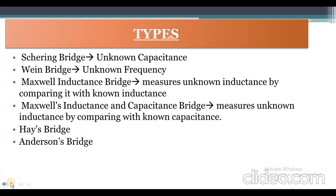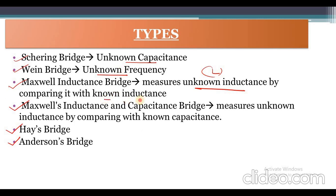These are the different types of AC Bridges: Schering Bridge, Wien Bridge, Maxwell Inductance Bridge, Maxwell Inductance and Capacitance Bridge, Hay's Bridge, and Anderson's Bridge. The Schering Bridge is used to find unknown capacitance; Wien Bridge for unknown frequency; Maxwell Inductance Bridge for unknown inductance using a known inductance; Maxwell Inductance-Capacitance Bridge for unknown inductance using known capacitance; and Hay's and Anderson's Bridge also measure unknown inductance.